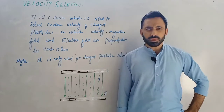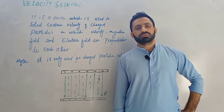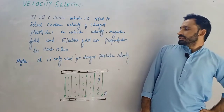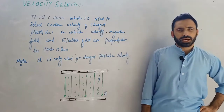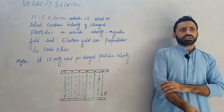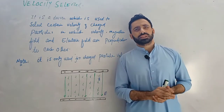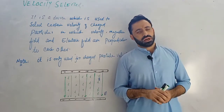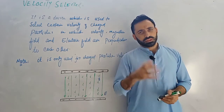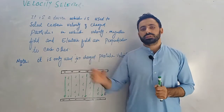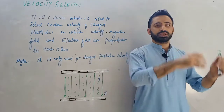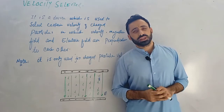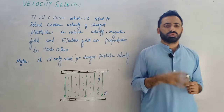The uncharged particle — gamma, photon — these are uncharged particles. There are two types of particles: uncharged particles and charged particles. It is only the charged particle that we can work with using this device.